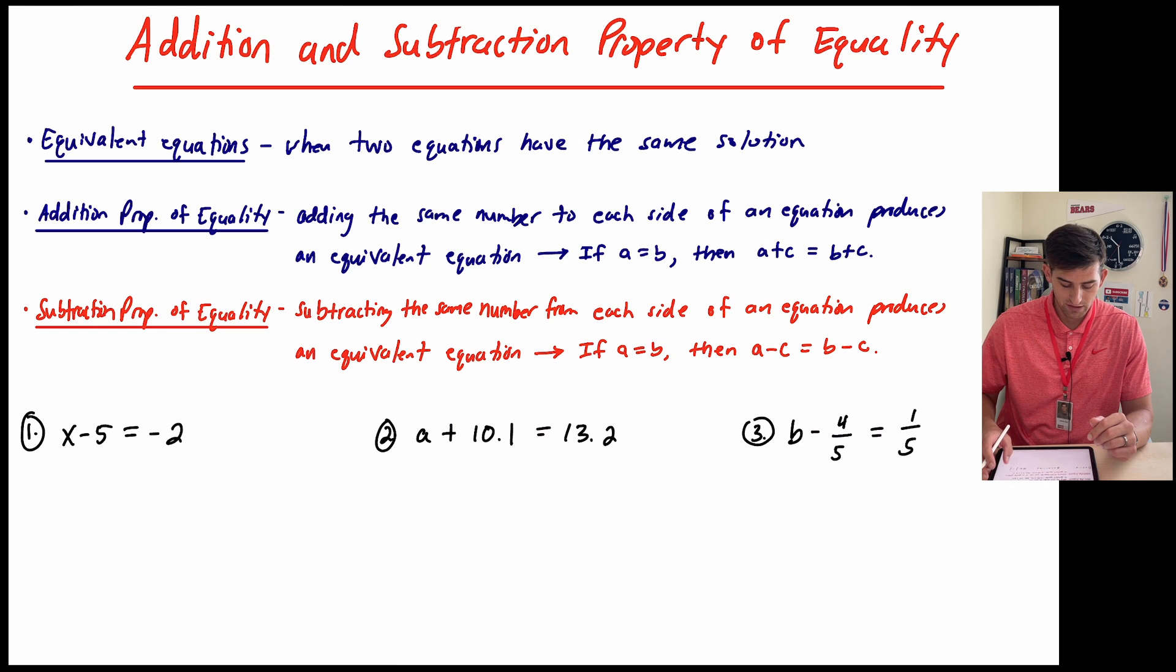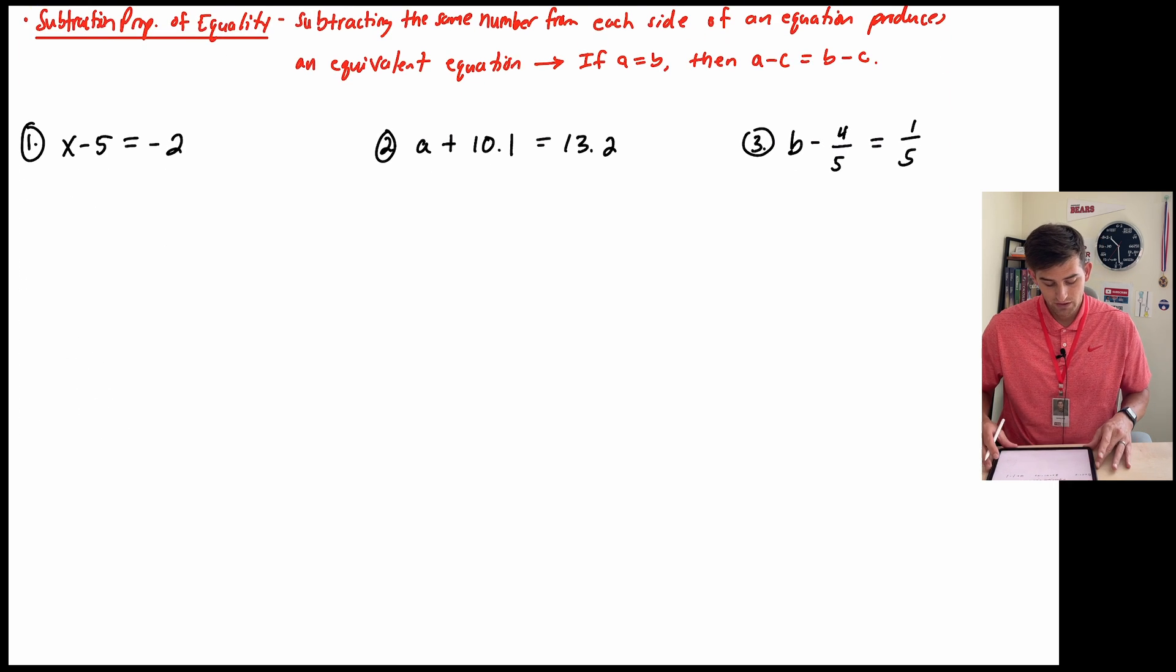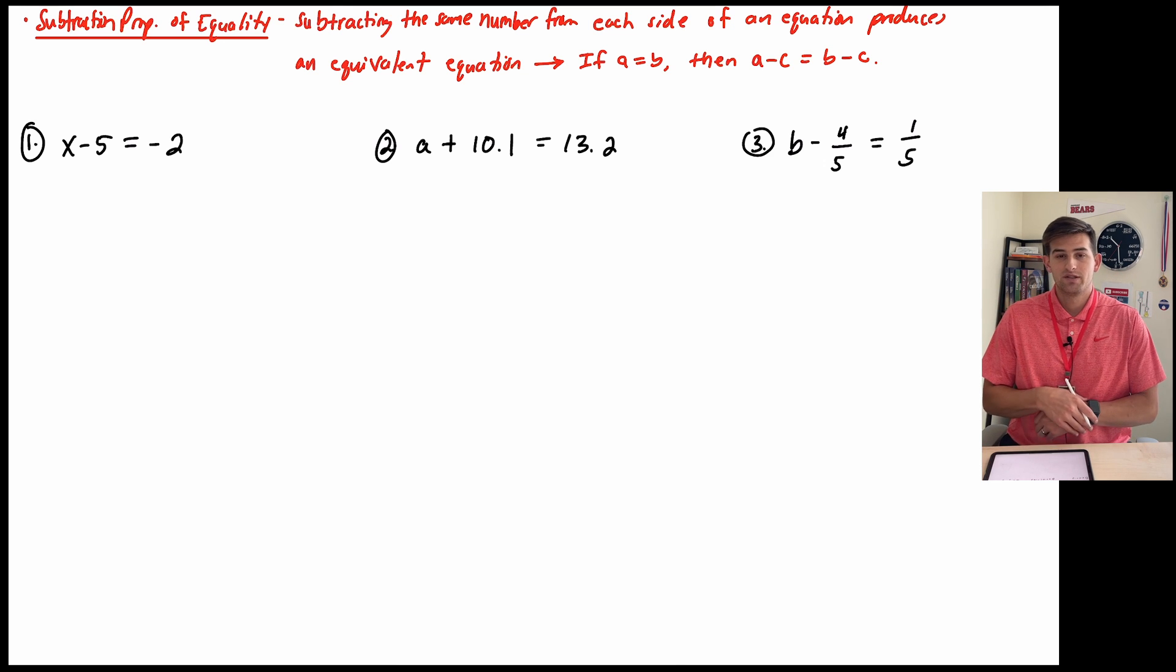So let's look at how this is going to look with some examples. For number one, we see X minus 5 is equal to negative 2. So for these equations, we would consider them simple equations because we only have to do one step in order to solve for the variable. So that's our goal. We're trying to figure out what the variable is equal to. We can do this by performing inverse operations to get X isolated or by itself.